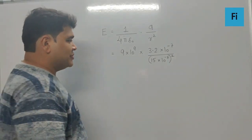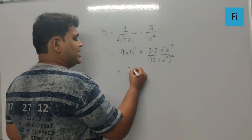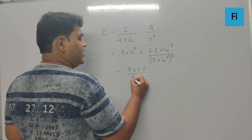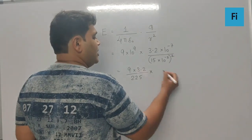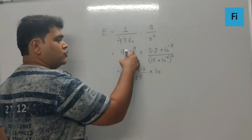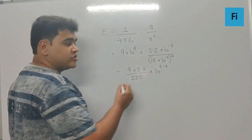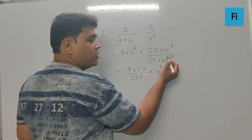So simply we need to rearrange this as 9 into 3.2 upon the square of 15 is 225. Into this becomes 9 into 10 raised to 9 minus 7, this will become 10 raised to minus 4 which goes in the numerator becomes plus 4.